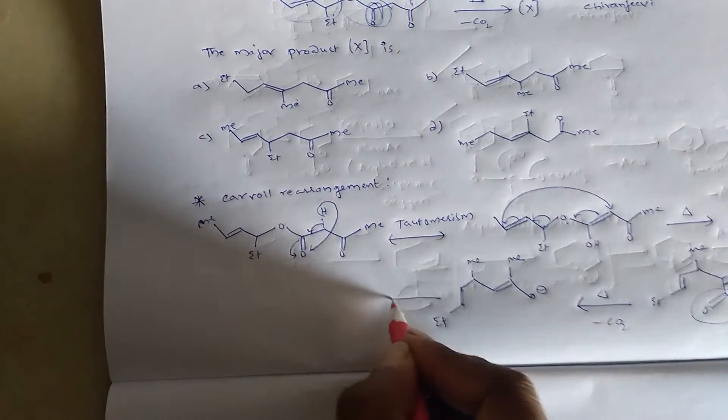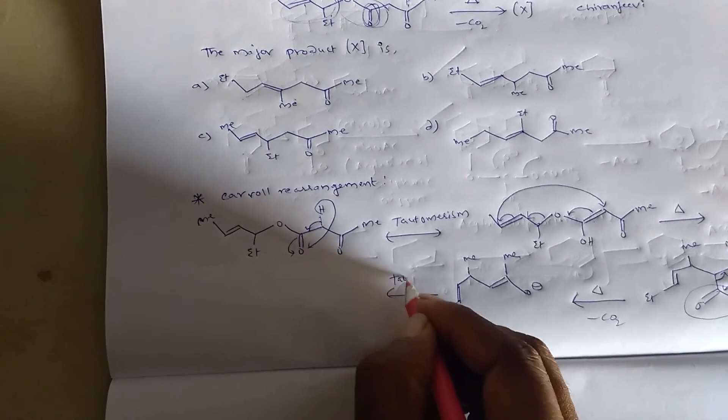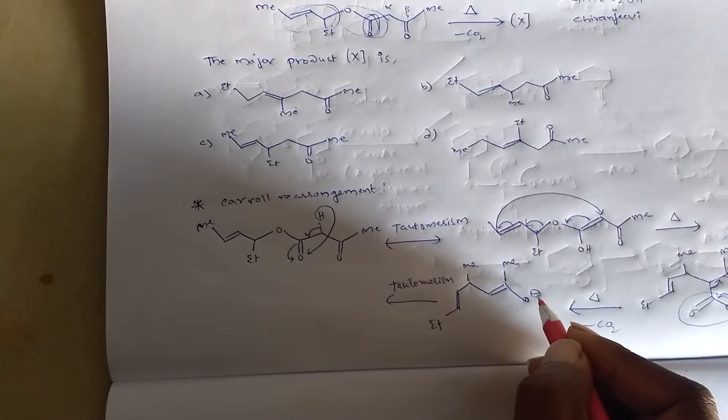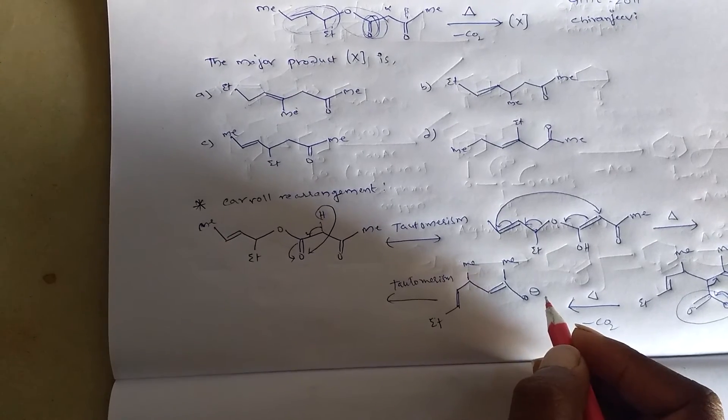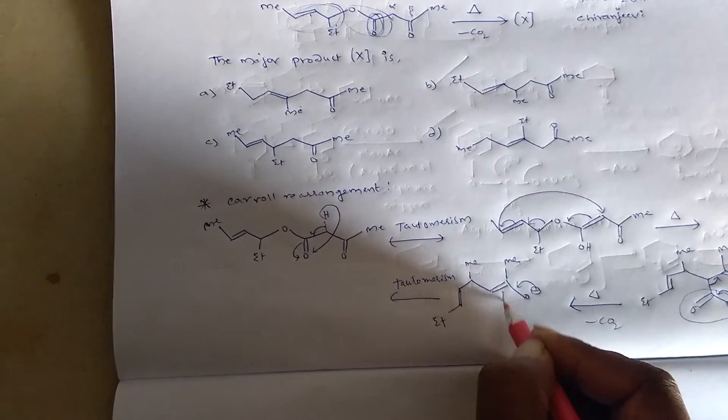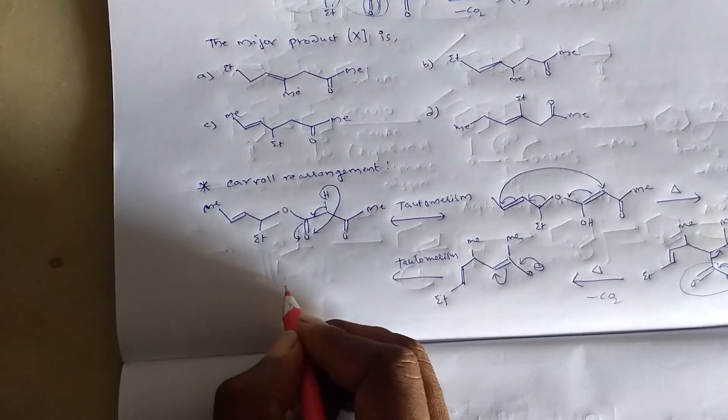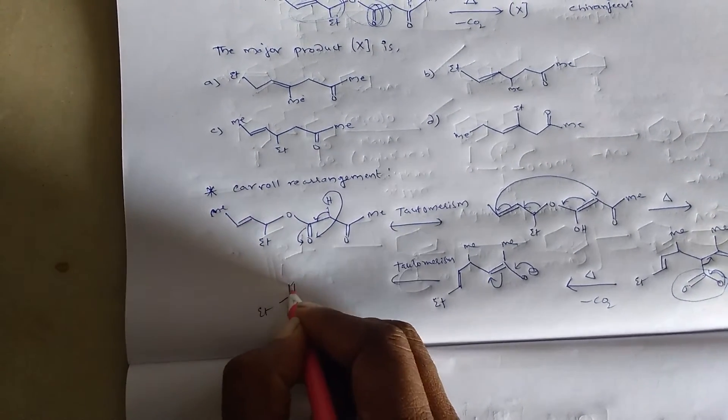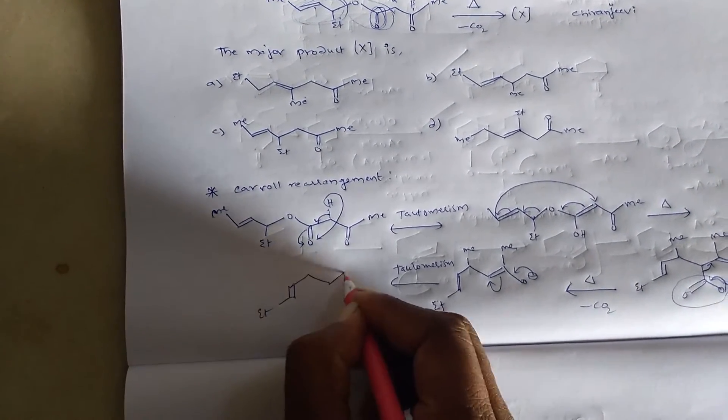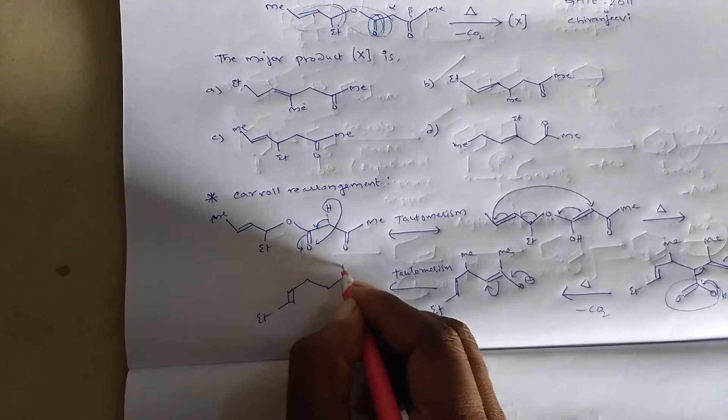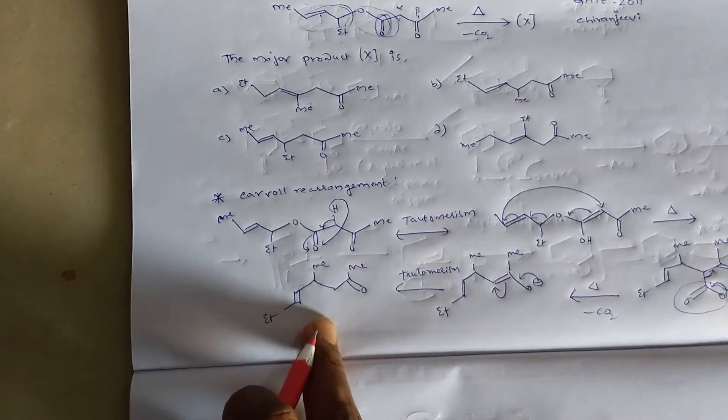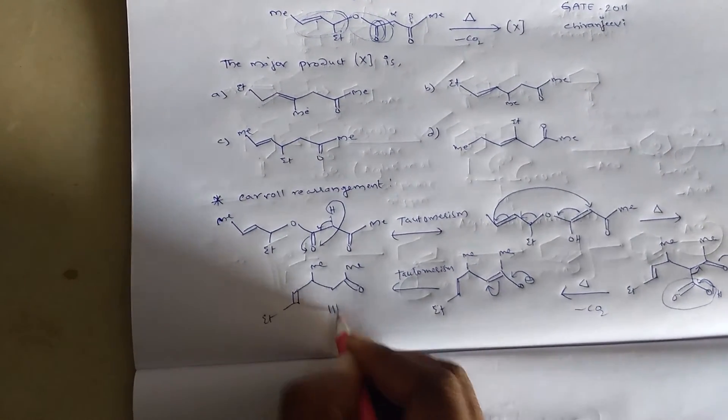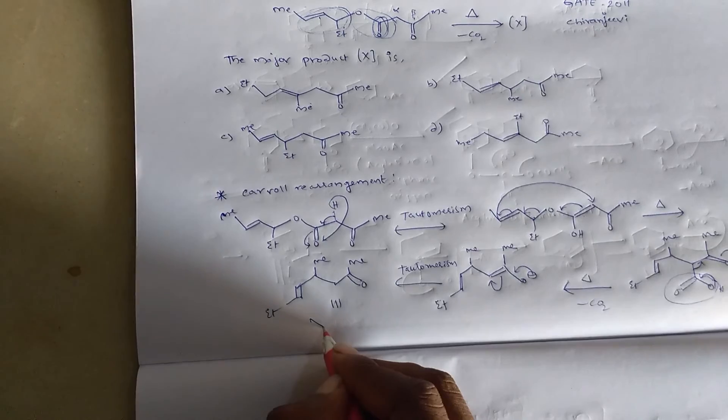On further tautomerization, we can get this compound. This is the final product. And we can write it as like this.